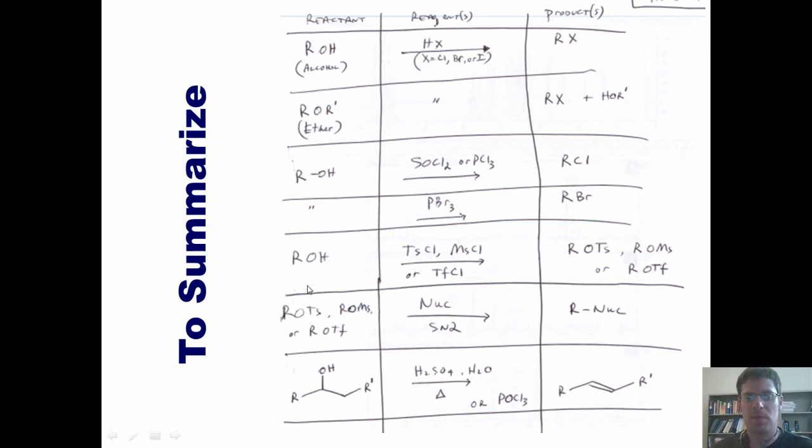Thus, in a two-step sequence, I can take an ROH and convert it into one of these, which are called sulfonate esters, and take the sulfonate esters and treat it with any nucleophile and get an SN2 reaction where the nucleophile has replaced the sulfonate ester group. In a separate reaction, I can take an alcohol such as this one, treat it with acid, water, or POCl3, and do an elimination reaction, which for this specific type of substance, an alcohol, is called a dehydration, giving me an alkene product.